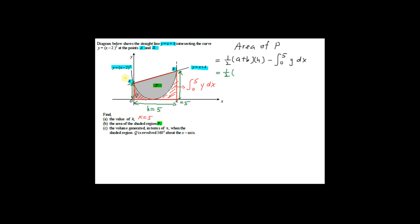The height of the trapezium equals 5, since k equal to 5. A is the length on the y-axis and B is the length at x equal to 5. To find A: the line y equal to x plus 4 at x equal to 0 gives y equal to 4, so A equal to 4. To find B: at x equal to 5, y equal to 5 plus 4 equal to 9, so B equal to 9.